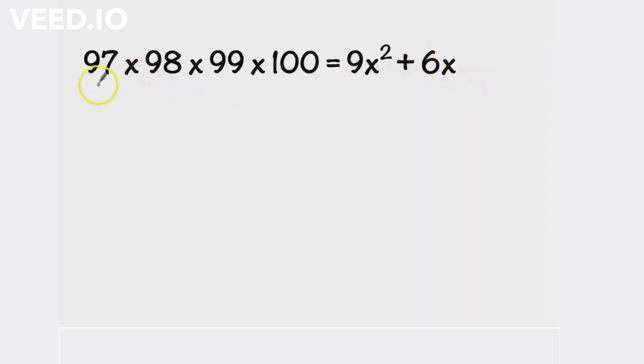The direct method to solve this quadratic equation is to multiply the numbers on the left, then bring this number to the right hand side and solve the quadratic equation. But the problem here is that we got a quadratic equation with a very large constant, so it will be very difficult to factorize.